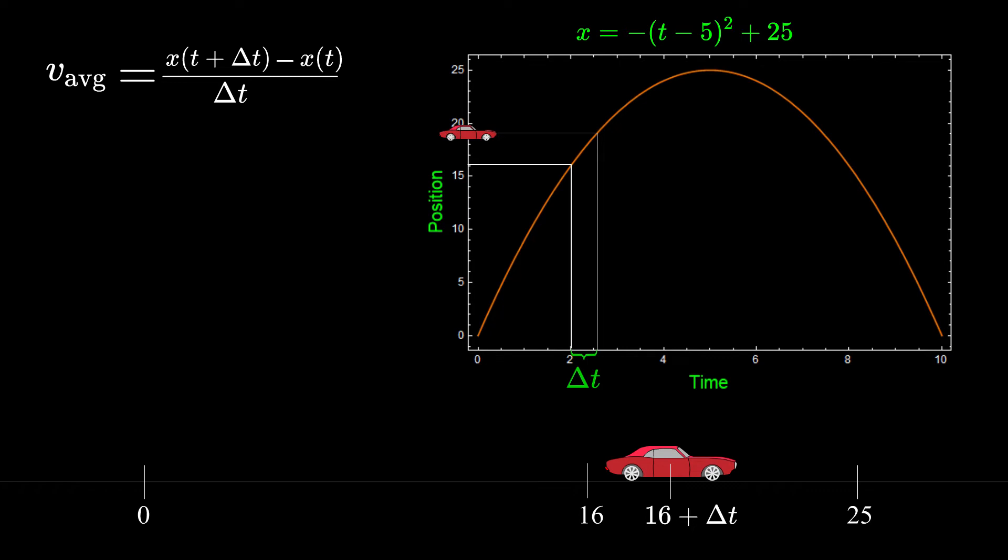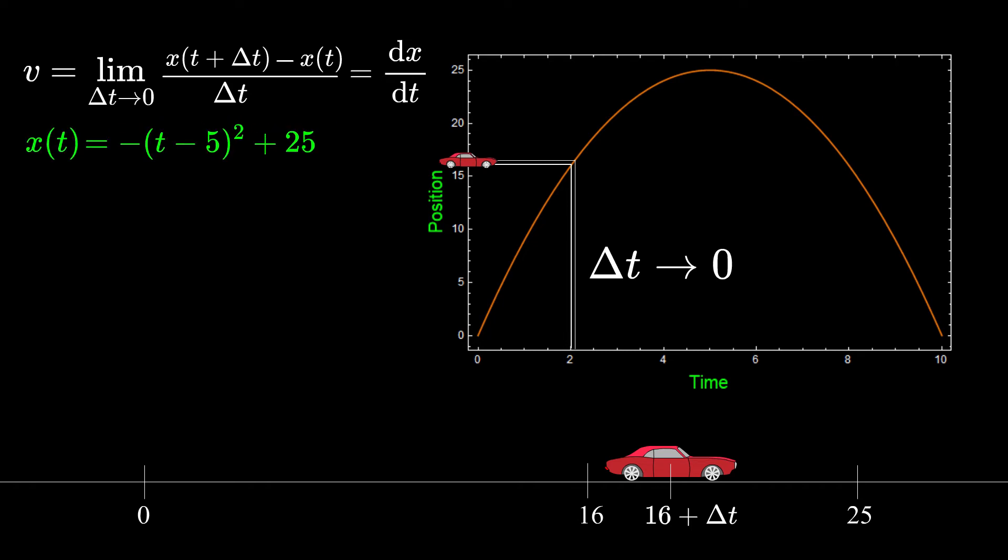Since we said we want exact velocity at time t, we take the limit of this expression as delta t goes to zero and this is the definition of derivative, which we denote as dx by dt.